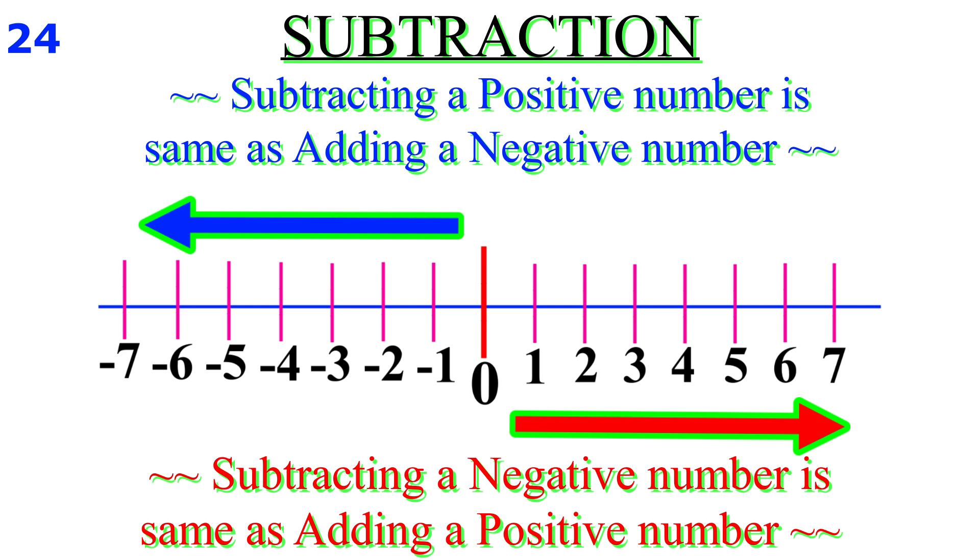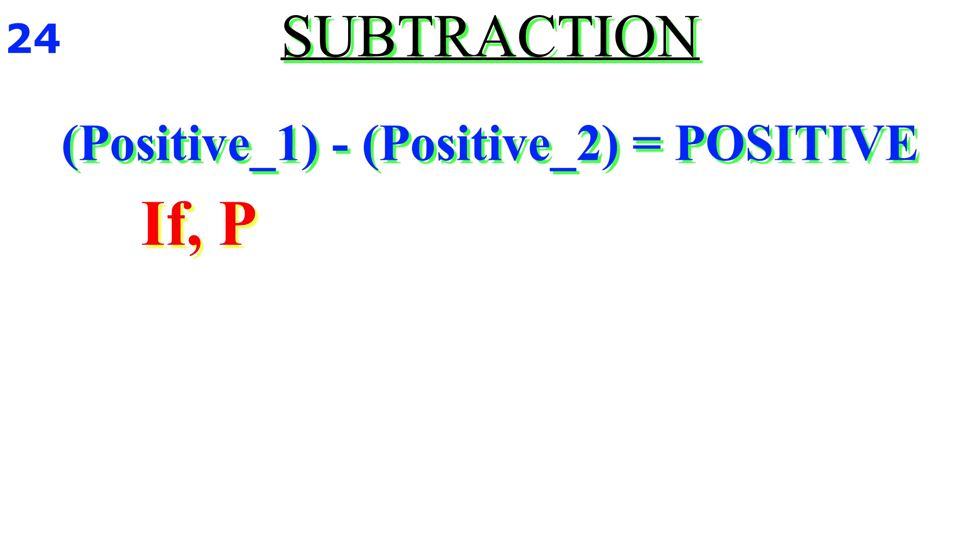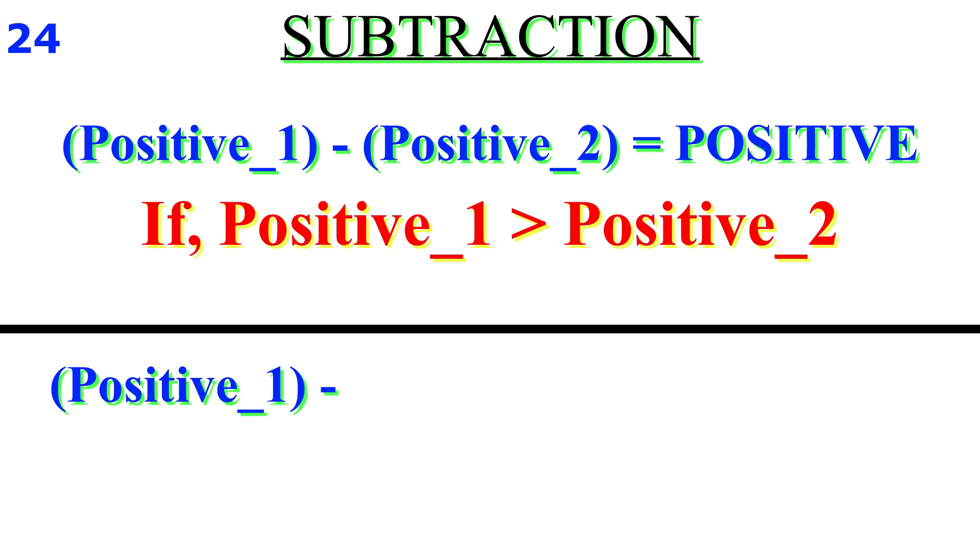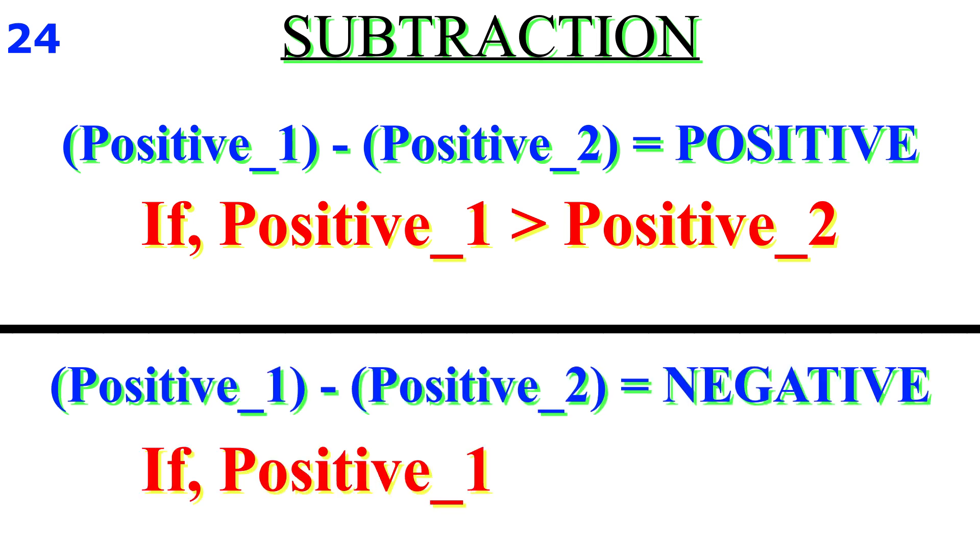The rules for subtracting integers are: positive minus positive equals positive if the first integer is greater. Positive minus positive equals negative if the second integer is greater.